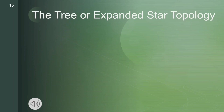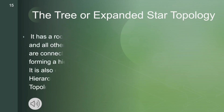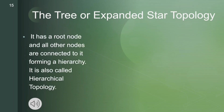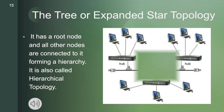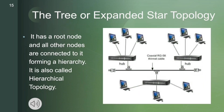Now the last but not least — the tree or expanded star topology. It has a root node and all other nodes are connected to it, forming a hierarchy. It is also called hierarchical topology, as you can clearly see in the diagram.